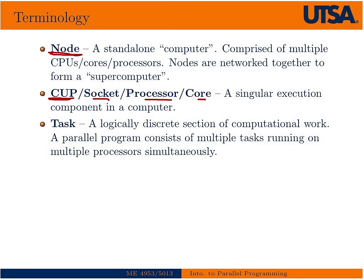A task is a logically discrete section of computational work that we want to do. We'll break our code up into particular tasks and send them off to separate nodes and separate processors to have work performed on them simultaneously. This is the notion of a parallel program — a collection of tasks that we send off to a bunch of cores and processors that exist on nodes forming a supercomputer.